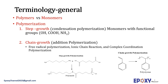Free radical polymerization, ionic chain reaction, and complex coordination polymerization are the main classes of chain-growth polymerization. Polyolefins like polyethylene and polypropylene are familiar members of this type of polymerization.